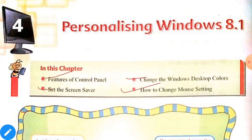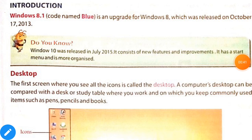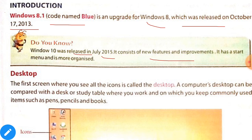Now let's come to the chapter introduction. Windows 8.1, code named 'Blue,' is an upgrade for Windows 8, which was released on October 17, 2013. Do you know Windows 10 was released in July 2015? It consists of new features and improvements, and has a Start menu with a more organized desktop.